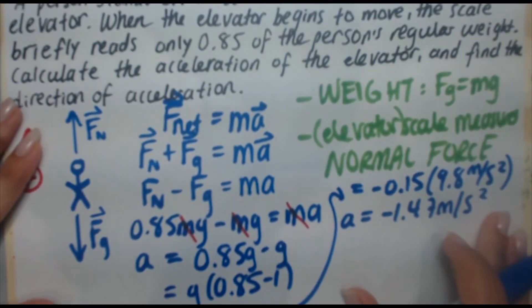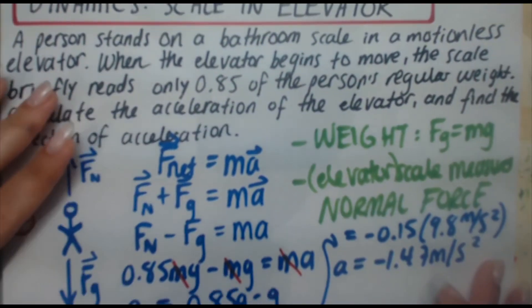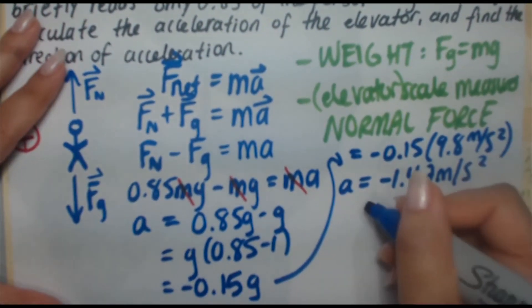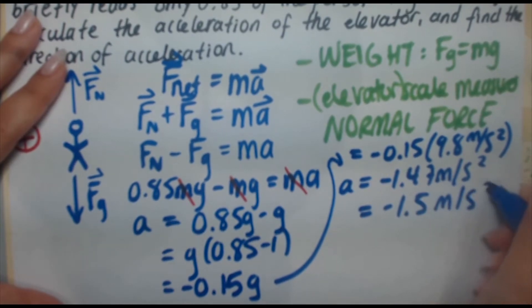Now, just to be accurate to the problem, the scale only reads to an accuracy of two sig figs. Therefore, our final answer must only have two sig figs. So, we're actually going to round this to minus 1.5 meters per second squared.